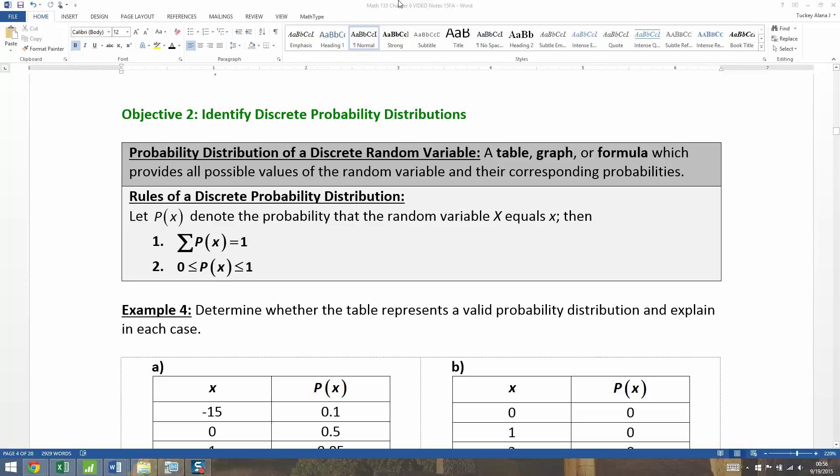Now that we know what discrete random variables are and how to graph them in a probability histogram setting, we also want to be able to figure out some of the rules that govern these discrete random variables and how we can make distributions of them in a table form, because that's going to be extremely useful to us.